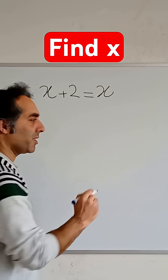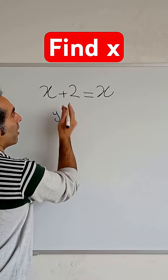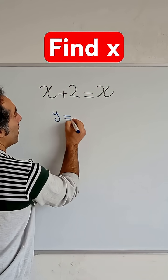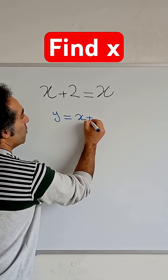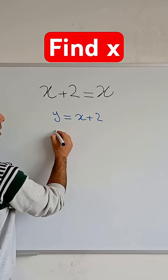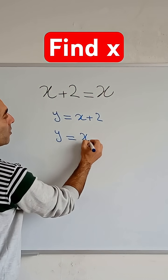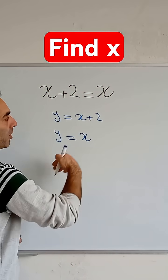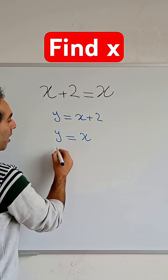I'll define two functions - one for the left side and one for the right side. y = x + 2 for the left side, and y = x for the right side. I'll try to draw these functions as a diagram.